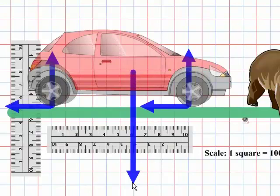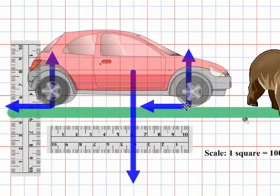This one: 9,000 newtons down. This one: 4,500 newtons up. Same, this one: 4,500 newtons up. This one: 3,500 newtons to the left. And this one the same: 3,500 newtons to the left.